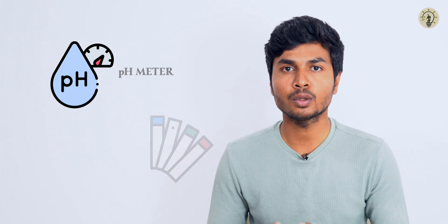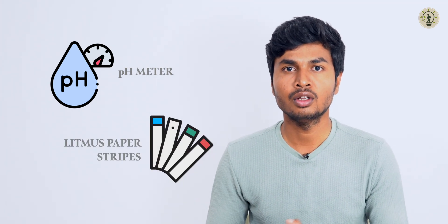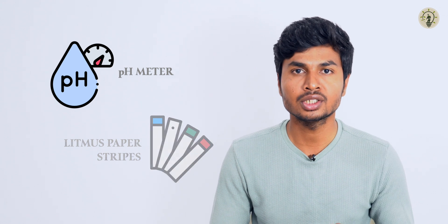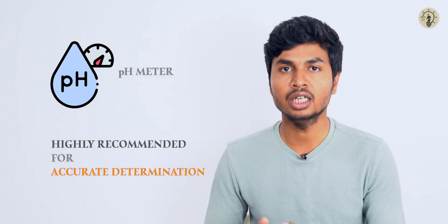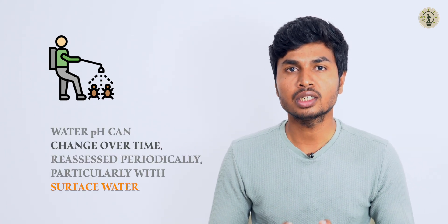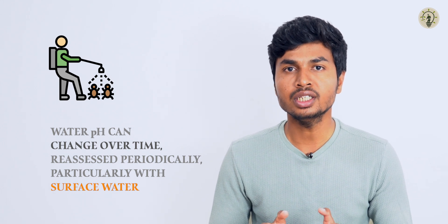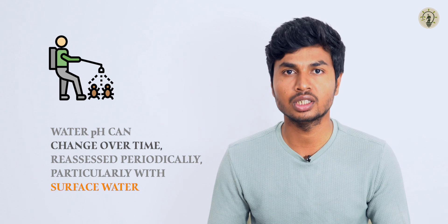Before spraying, applicators should always test their water pH using a pH meter or pH litmus strips. For accurate determination of water pH, a pH meter is highly recommended. Spraying persons should also keep in mind that pH of water can change over time and needs to be reassessed periodically, especially with surface water.